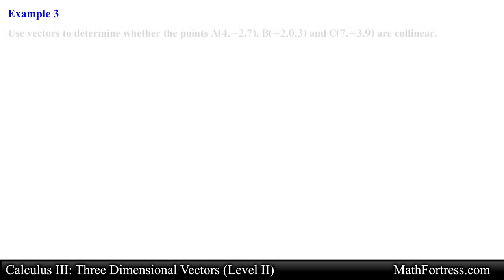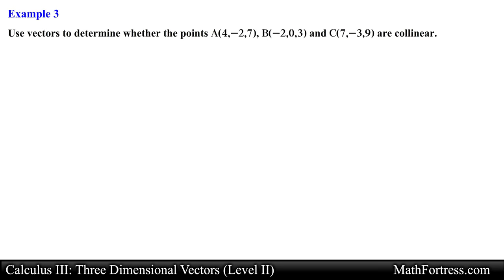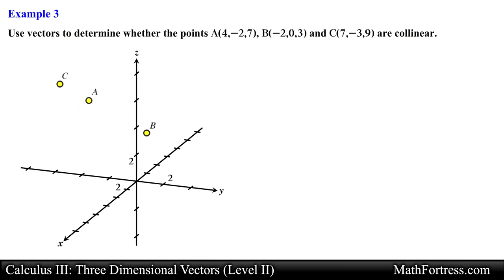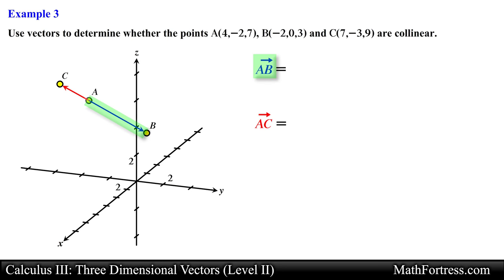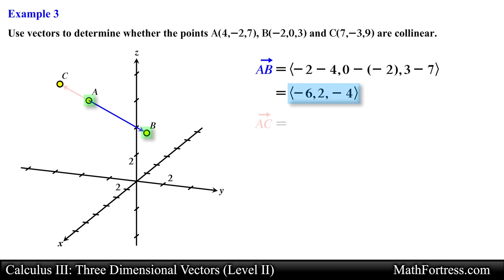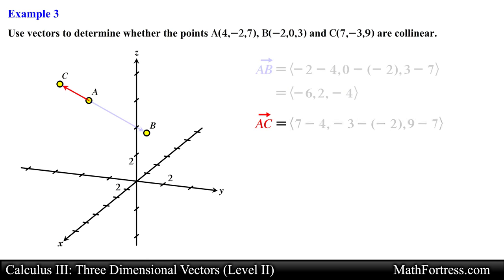Let's move along to the next example. Use vectors to determine whether the points a, b, and c are collinear. Let's go ahead and plot these points to get a visual. We are asked to show that these three points lie along the same line. We can show this by first assuming they are collinear and breaking the line into two vectors using a common point. We find the components of vector AB by subtracting point a from point b, and the components of vector AC by subtracting point a from point c.